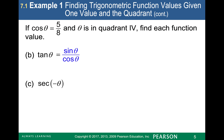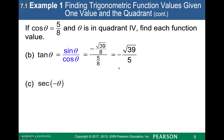If I want to find tangent, I can relate it using the fundamental identity that tangent is the sine value divided by the cosine value. Now that I know my sine and cosine values, I can plug those in and use what I know about fractions. I would take negative square root of 39 over 8 and multiply by the reciprocal of the denominator, which is 8 over 5, and the 8s cancel, leaving 5 in the denominator.